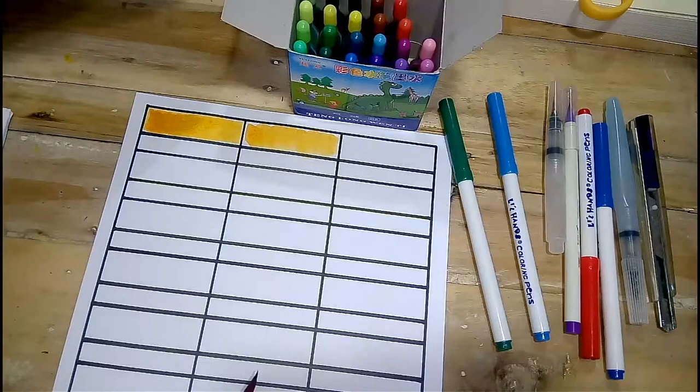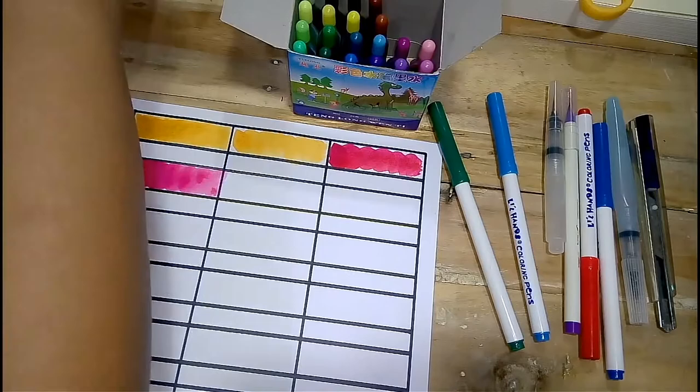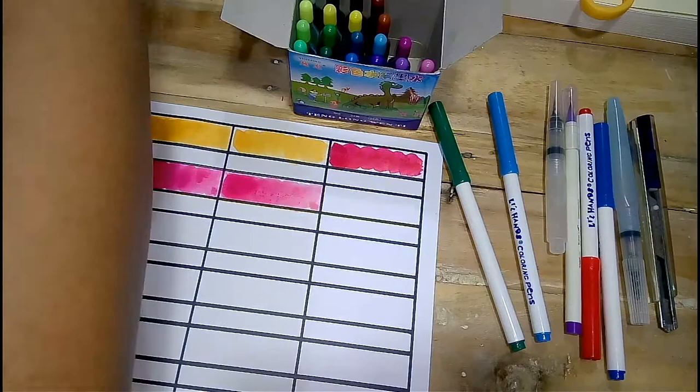Although you can't see it, after I wash the brush I make sure it's completely dry by dabbing it on tissue paper so the ink doesn't get diluted and we can see how vibrant the ink really is.